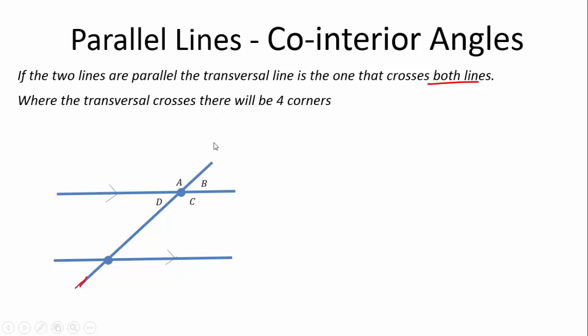Now the very interesting thing about a transversal line crossing two parallel lines is that they will create two identical sets of these corners. So if we look at E, F, G, H, this will be an identical set to A, B, C, and D. That is to say, E and A will be the exact same angle.